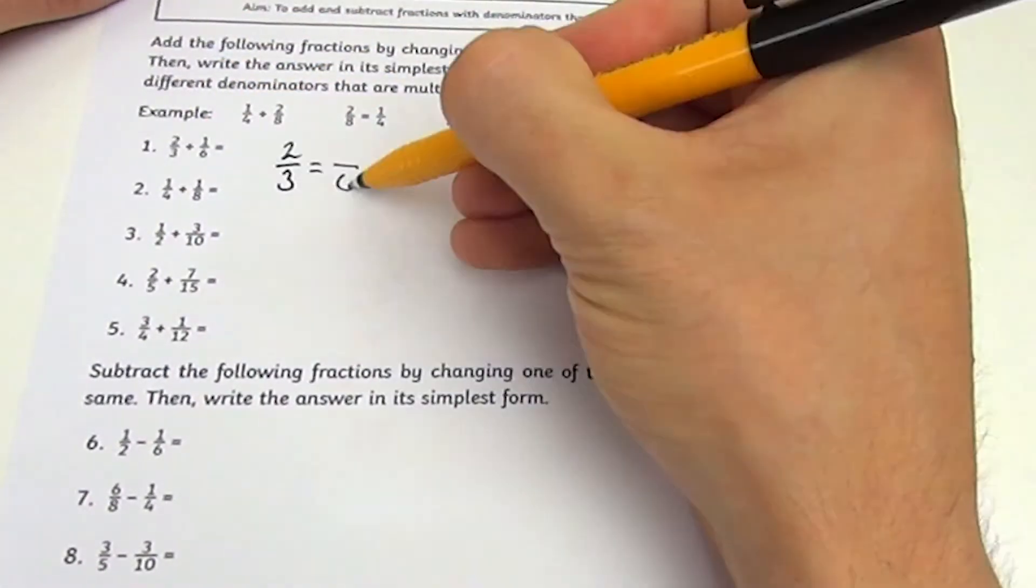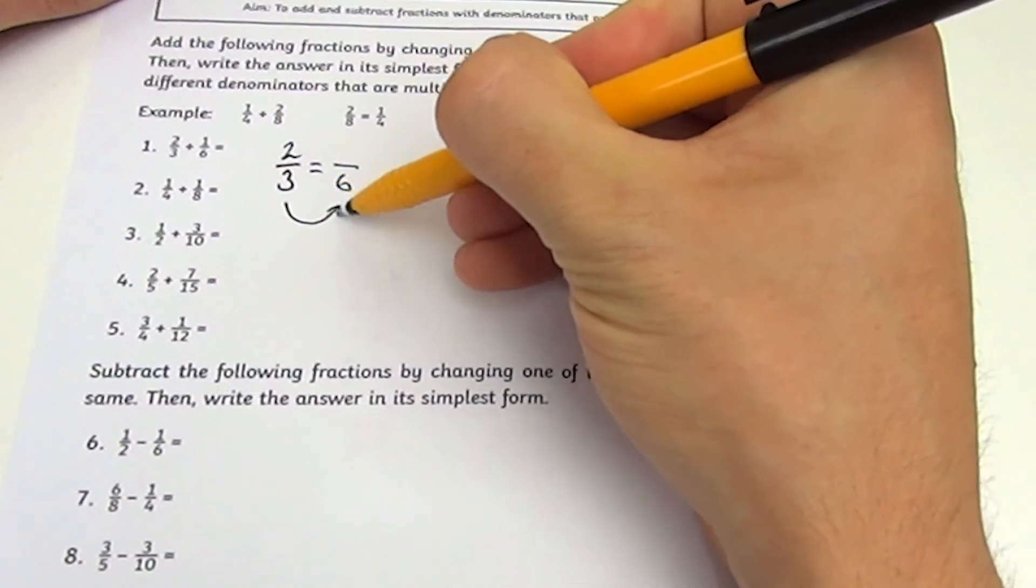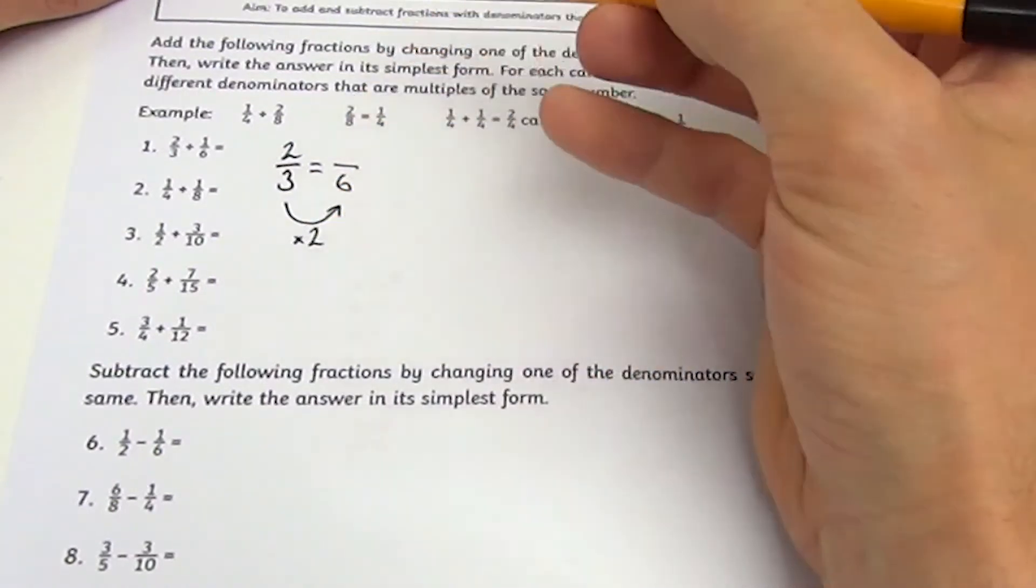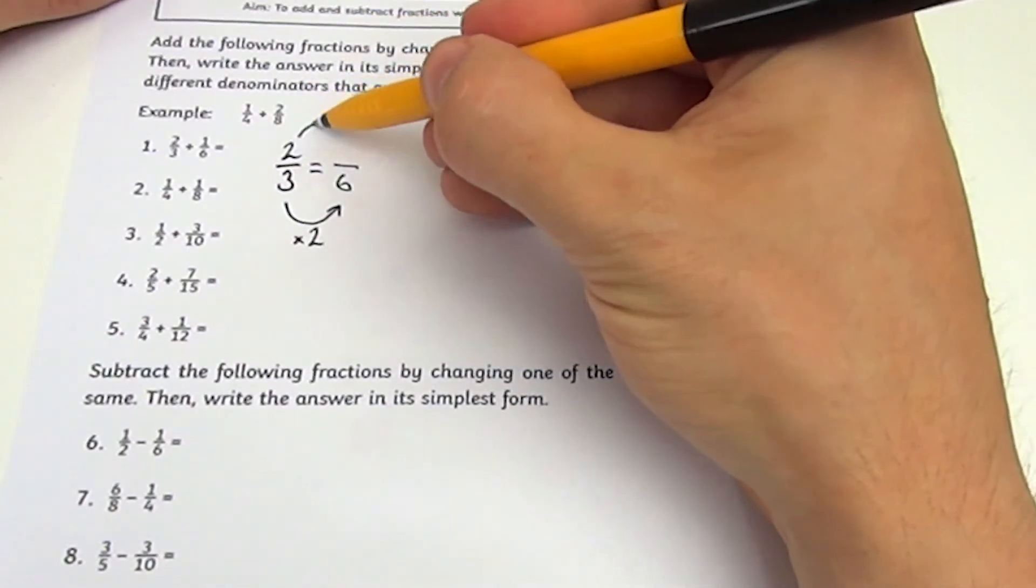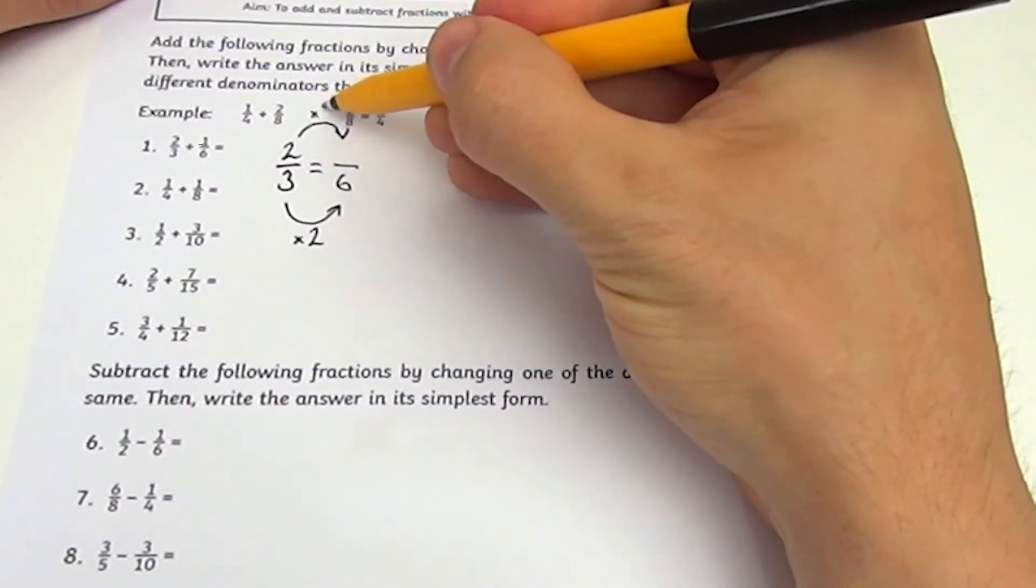a denominator of 6. I need to multiply the denominator by 2, and if I multiply the denominator by 2 to make it have the same value, I also need to do the same to the numerator. 2 times 2 is 4.